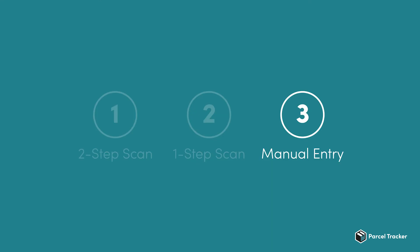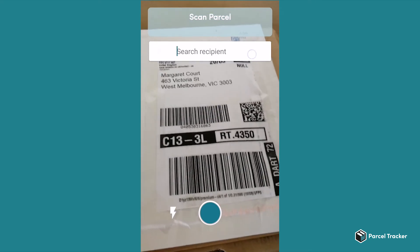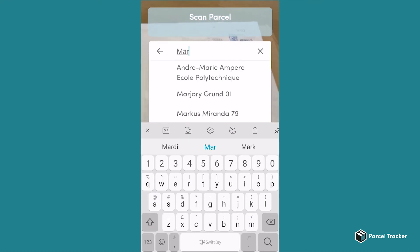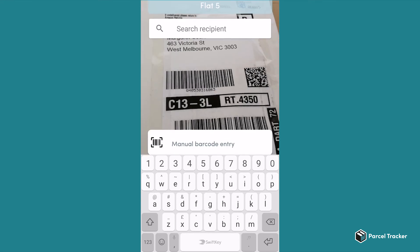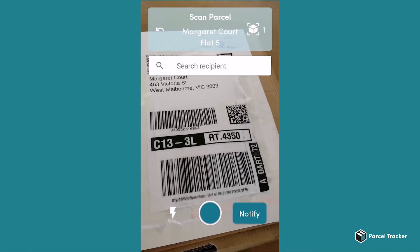Lastly, let's look at the manual entry. You can enter the name and barcode manually. This is useful if, for example, the sender has written the wrong name on the parcel, or the parcel does not have a barcode. Just click on the little blue button in the bottom right, and on Search Recipient. Here, you can enter the name of the recipient or location, such as room number. After finding the recipient, you can add a unique barcode. We recommend you mark the barcode on the parcel.